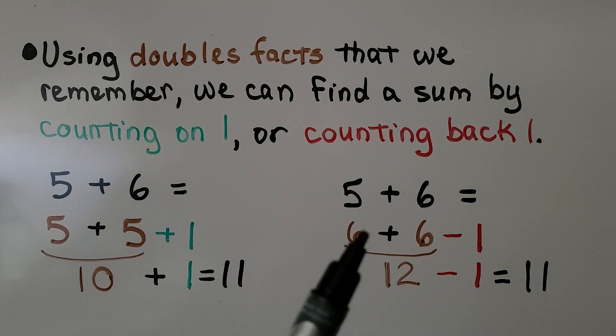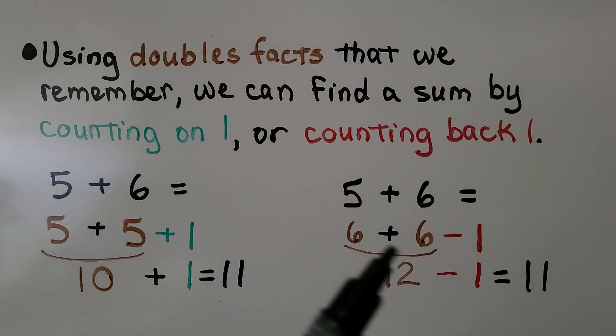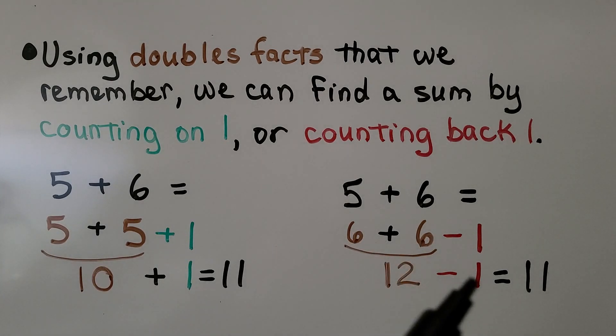We can also use the doubles fact 6 plus 6. If this 5 is 1 less, we can take away 1 from the doubles fact. We've got 12 minus 1. That's equal to 11.